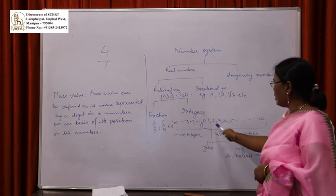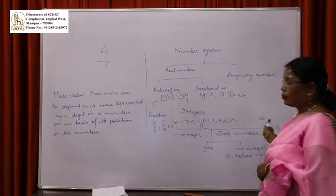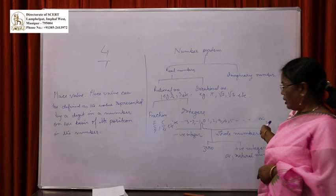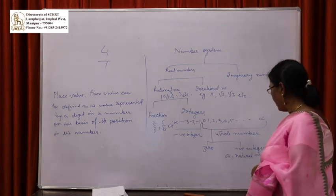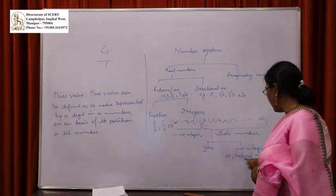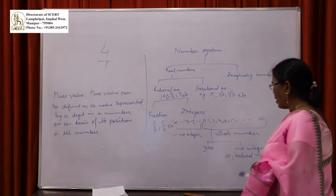Then positive integers: 1, 2, 3, 4, 5 up to infinity. These are the numbers in the positive state — positive integers.